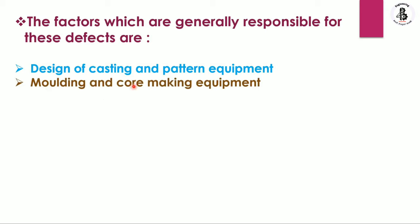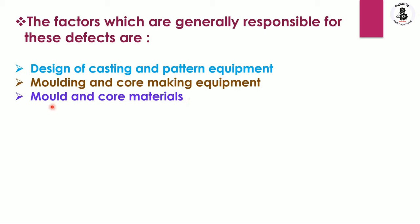Another factor is molding and core making equipment — whether manual molding or machine molding is used — and which kind of process is adopted for making sand molds as well as the core making process. Then mold and core materials: this depends on the selection of sand materials with binders and their proportions. You should control everything during the mold and core making process and the selection of mold and core materials.